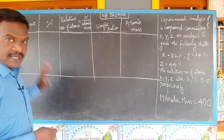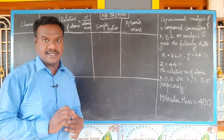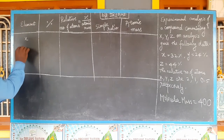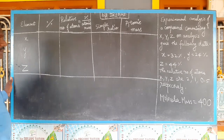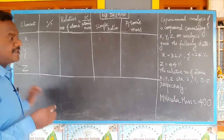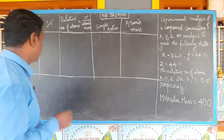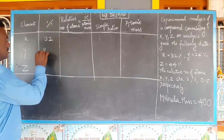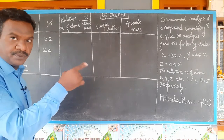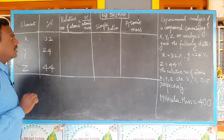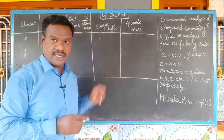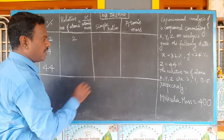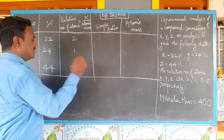We know the usual method. We know what elements are there: X, Y, Z. Their percentages are X = 32%, Y = 24%, and Z = 44%. Relative number of atoms given for X, Y, Z are 2, 1, and 0.5.